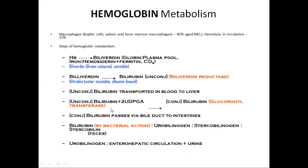Conjugation in the liver occurs along with uridine diphosphate glucuronic acid, and glucuronyl transferase enzyme converts unconjugated bilirubin into conjugated bilirubin. This conjugated bilirubin passes via the bile duct into the intestine. Within the intestine, via bacterial action, it is converted into urobilinogen, then into stercobilinogen and stercobilin, which is excreted in feces. A small amount of urobilinogen is reabsorbed into systemic circulation, and 5% that reaches the kidneys is converted by oxidation into urobilin, which is excreted in urine.